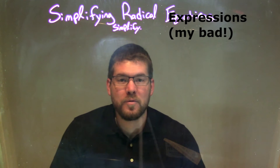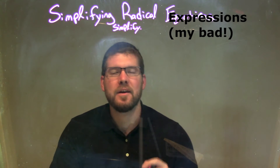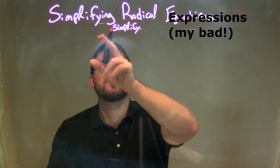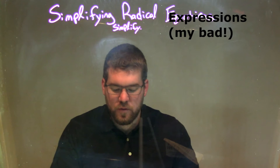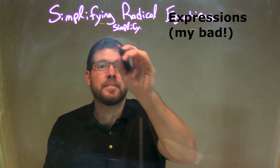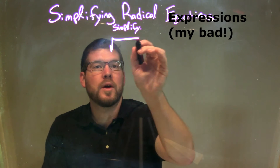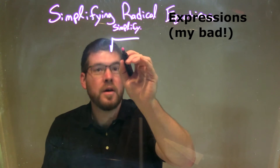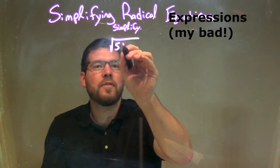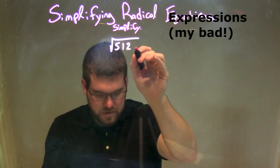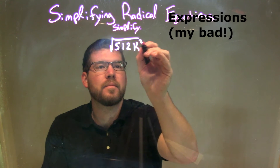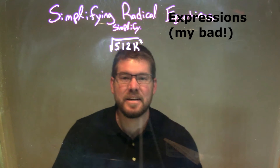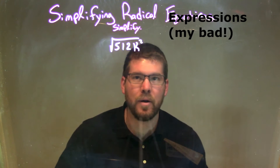Hi, I'm Sean Gannon, and this is MinuteMath, and today we're going to learn about simplifying radical equations. So if I was given this problem — the square root of 512k squared — and I needed to simplify that.